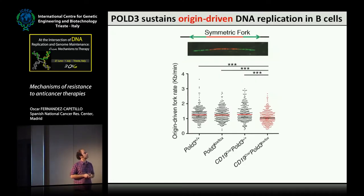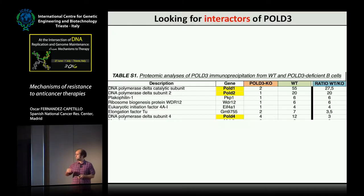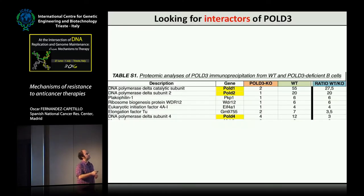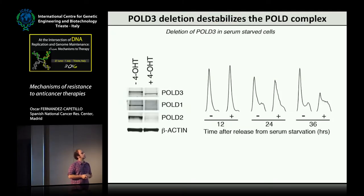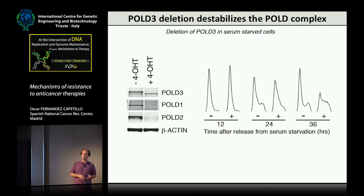To understand why, we did proteomics. We immunoprecipitated Pol D3 from wild-type B lymphocytes and null extracts and compared the proteomes. The IP worked — you purify Pol D1, Pol D2, and Pol D4 — but their abundance drops severely in the knockout, suggesting that when you eliminate Pol D3, the whole complex is destabilized. We verified this in MEFs: serum-starved cells treated with tamoxifen for three days lost Pol D3, and so did Pol D1 and Pol D2. Pol Epsilon didn't change. So in mammals, eliminating Pol D3 destabilizes the entire Pol D complex, and cells released into serum have major problems in DNA replication.